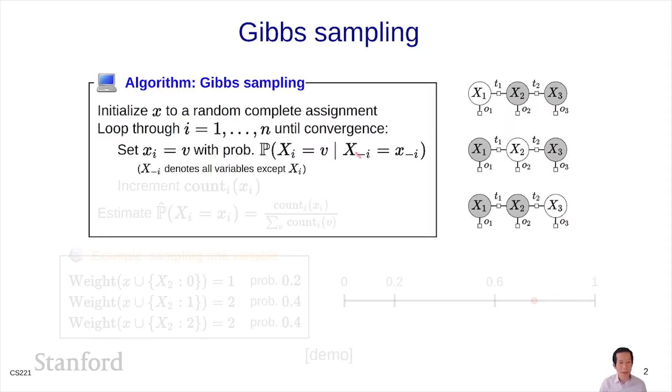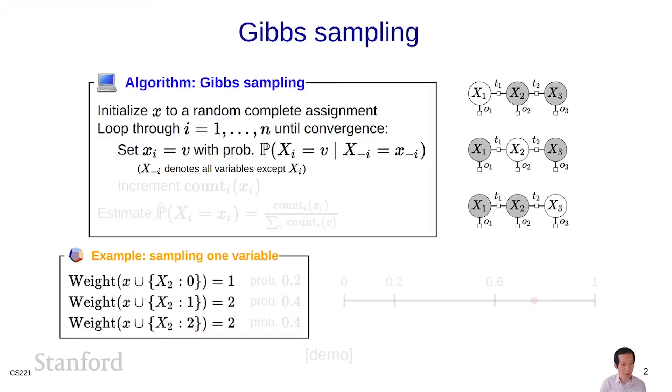Now how do I sample xi equals v? Here is one example. We're going to try assigning xi equals v and getting some weight. For every possible assignment of x2, I'm going to get some weight. Remember in ICM, I would just simply take the value that produced the largest weight. But the main difference with Gibbs sampling is that I'm going to take these weights, and normalize them to produce a probability.